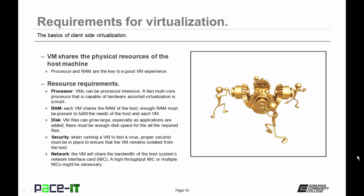VMs can share in the network, and because of that, you need to make sure that your NIC, your network interface card, has a high enough throughput to ensure a good network experience for the host and the VM. Or you might consider putting in multiple network interface cards and using one or more of them for your VMs.